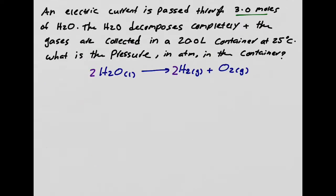Next practice problem: water (liquid) is decomposed by electricity into H₂ and O₂ gas. They ask for the pressure in ATM in the container. This is a gas problem, so write PV = nRT. It is not a changing problem — no variable is changing — so I write straight PV = nRT.